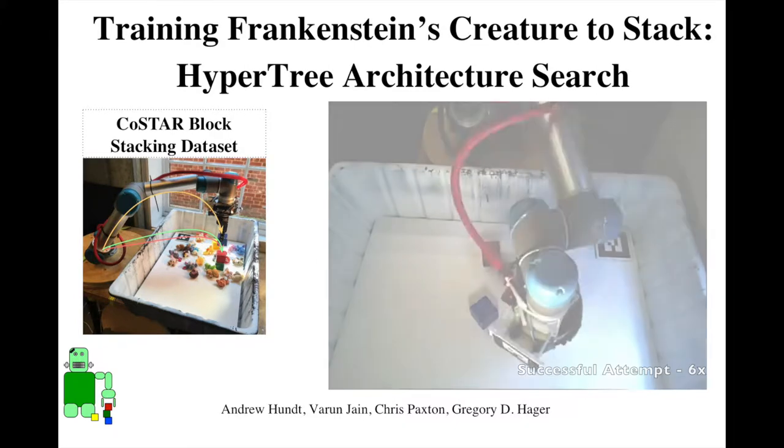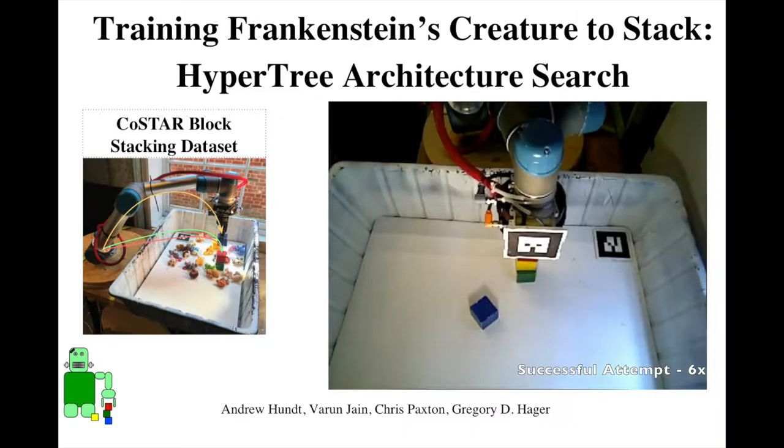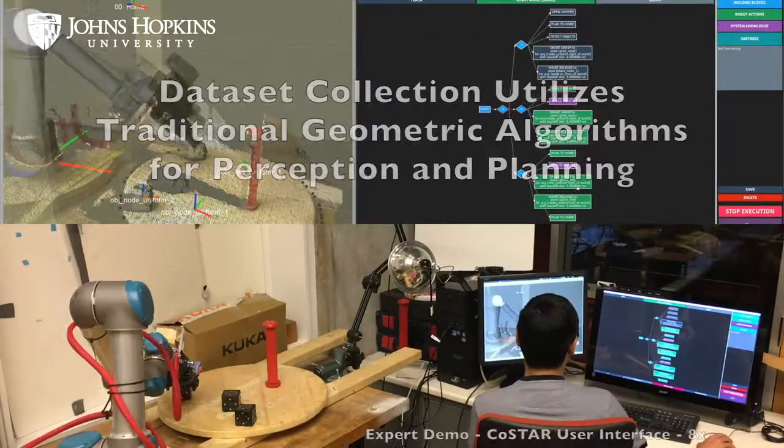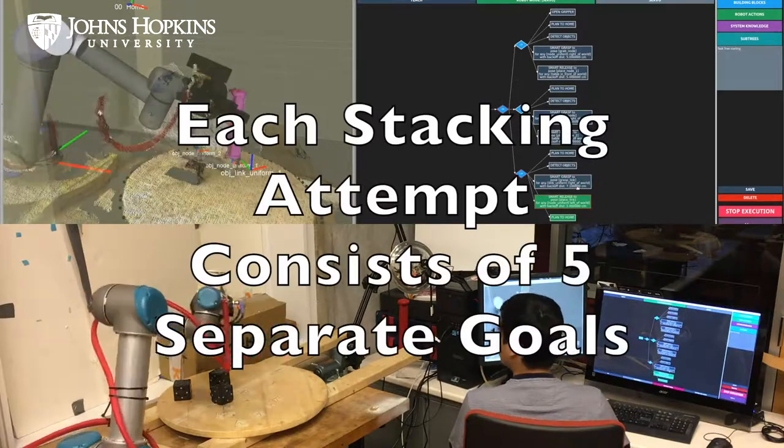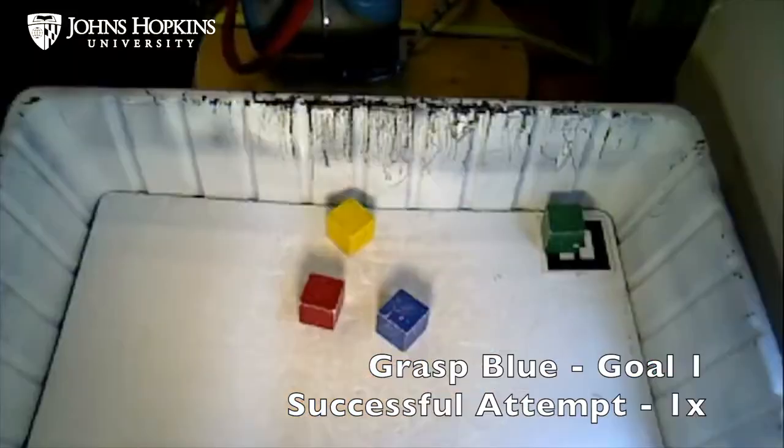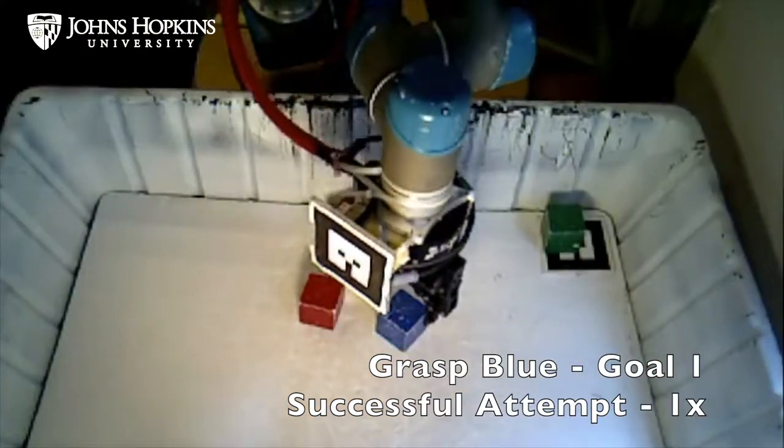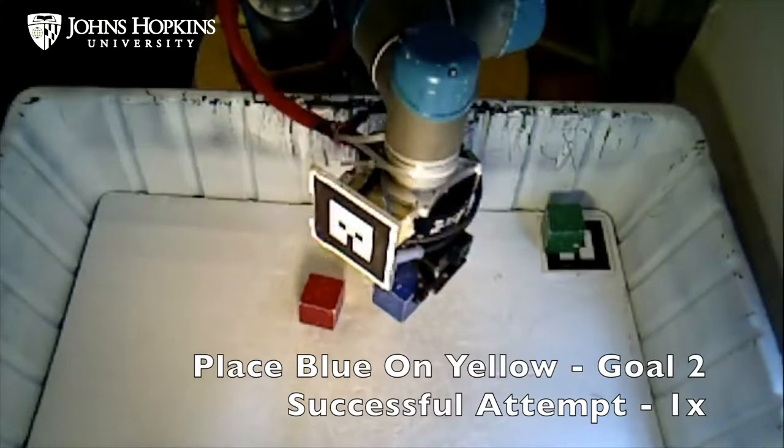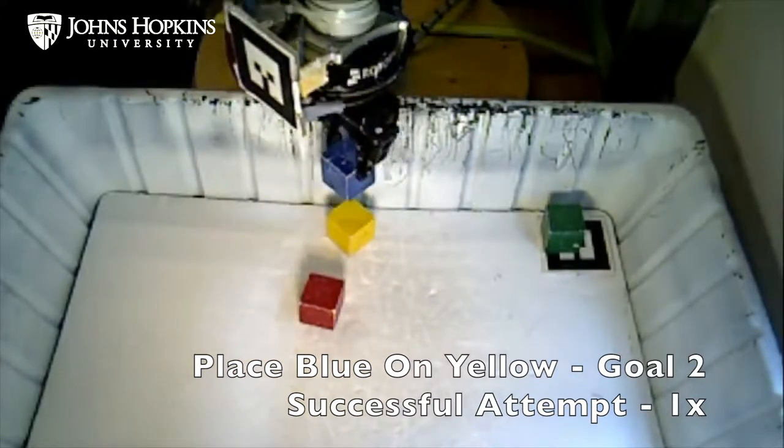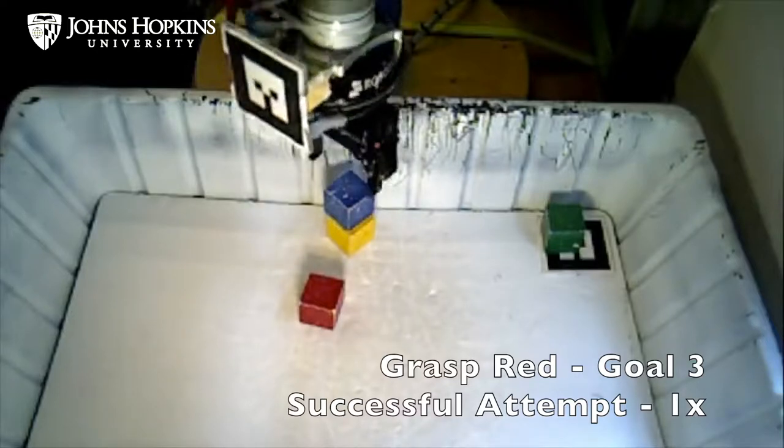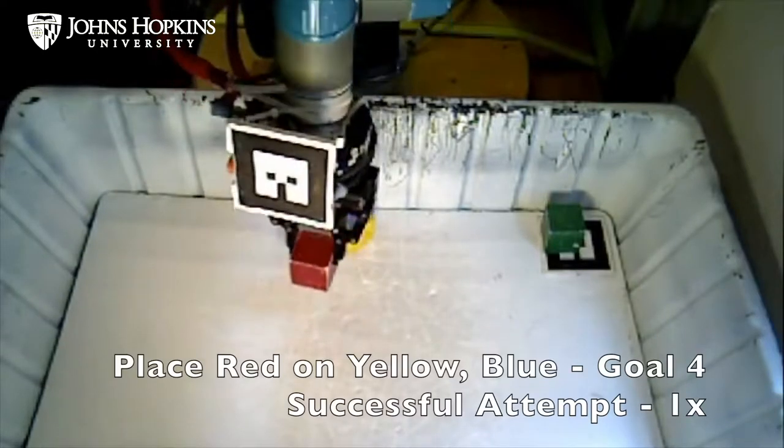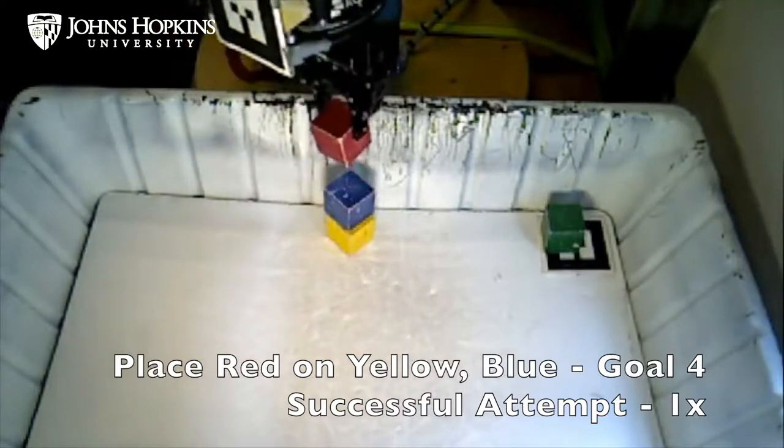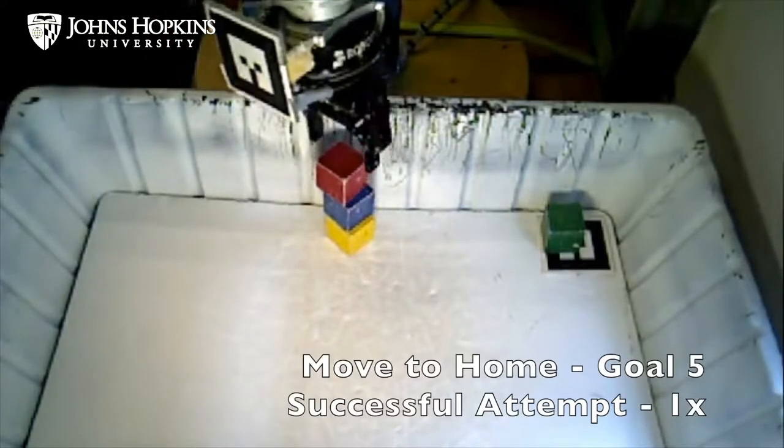The robot's goal in the dataset is to stack blocks three tall. Execution uses traditional geometric planning algorithms, and each stacking attempt consists of five separate goals. In this example, goal one is to grasp the blue block. Goal two is to take the blue block and place it on the yellow block. Goal three is to grasp the red block. Goal four is to take the red block and place it on both the yellow and blue blocks. The final goal five is to move to the home position.